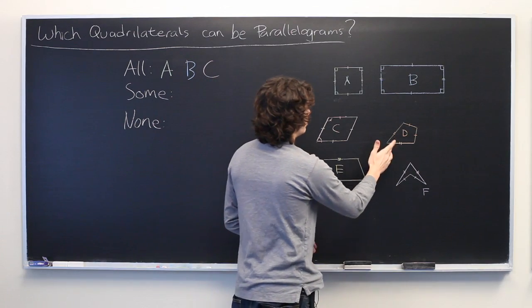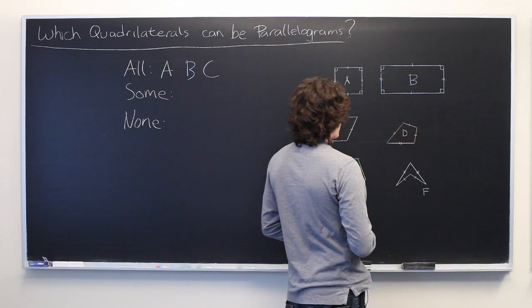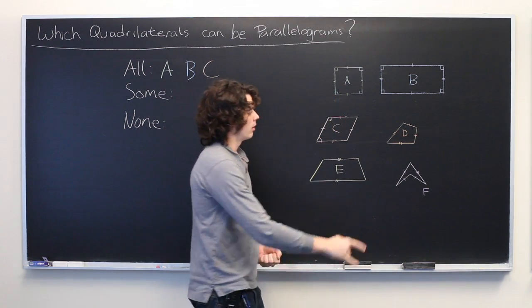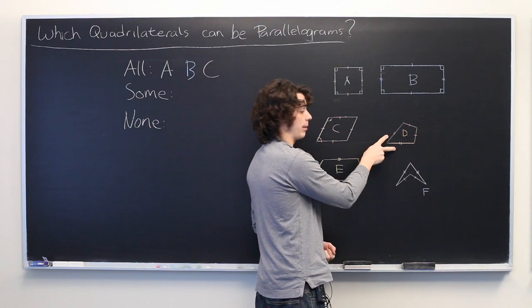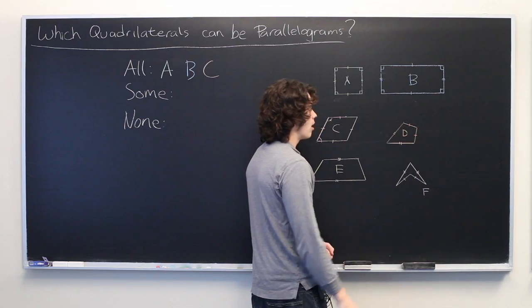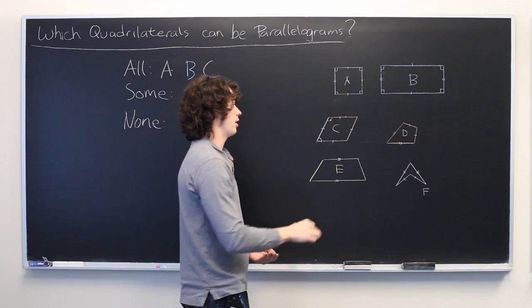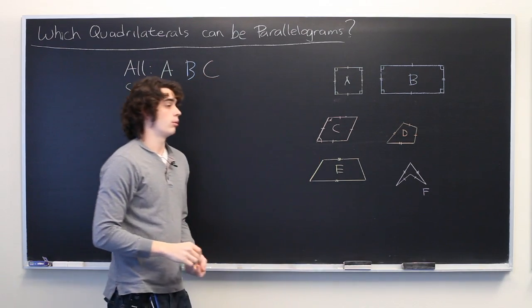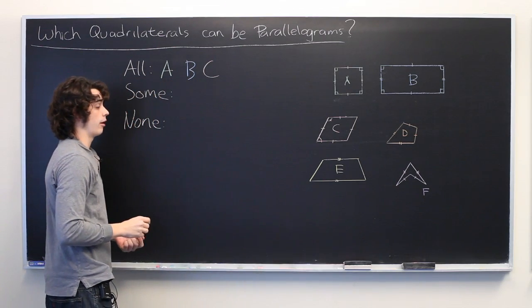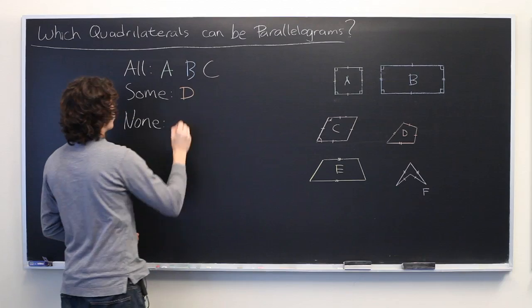Now, for the kite. The kite is somewhat of an unusual shape, but there is one special case of the kite that can make it a parallelogram. So, by definition, these two sides will be of the same length, and these two sides will be of the same length. But if all four are the same length, it is still a kite, but that also makes it a rhombus, which, as we know, is a parallelogram. So, it is possible for a kite to be a parallelogram, but not guaranteed. So, we'll put that under some.